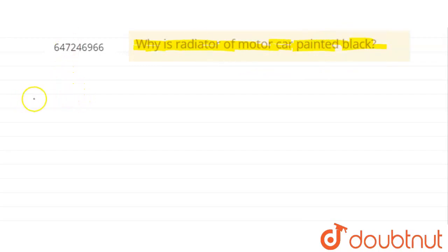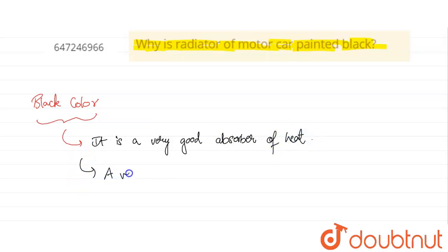So basically, we need to understand that black color is a very good absorber of heat and it is also a very good radiator of radiant heat.